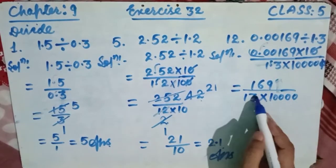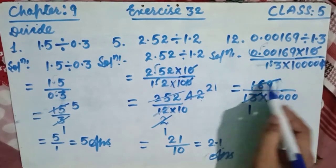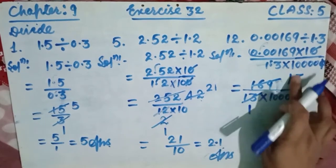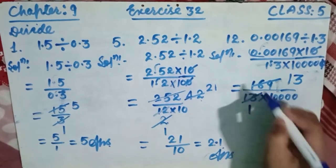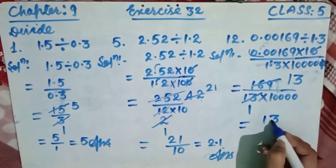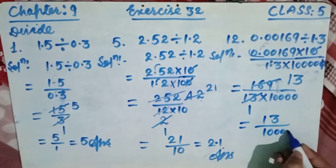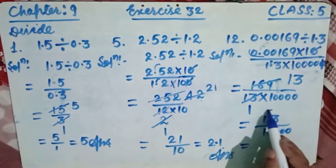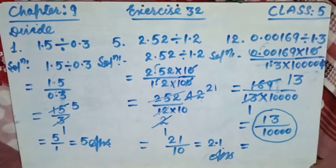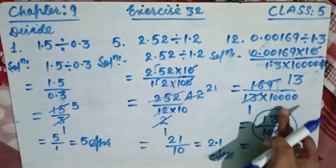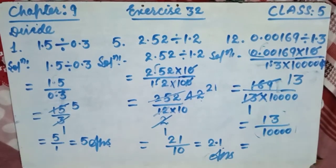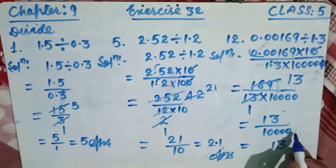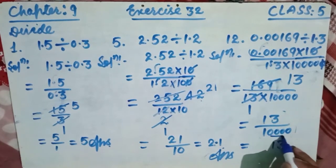We now have 169 over 13 times 10000. Since 13 times 13 equals 169, the numerator 169 divided by 13 gives 13. So we now have 13 over 10000. This is a decimal fraction, and decimal fractions are easy to solve.